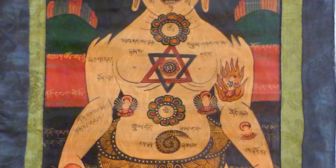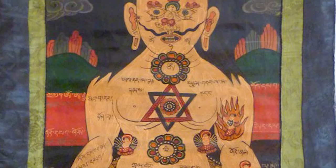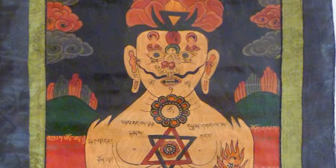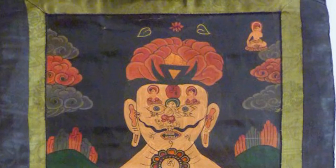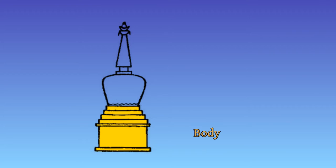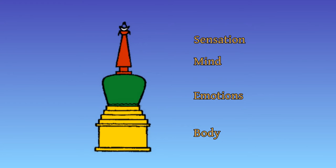As the chakra system made its way through the ages, the chakras became associated with different phenomena: the body, emotions, mind, sensation, and space.